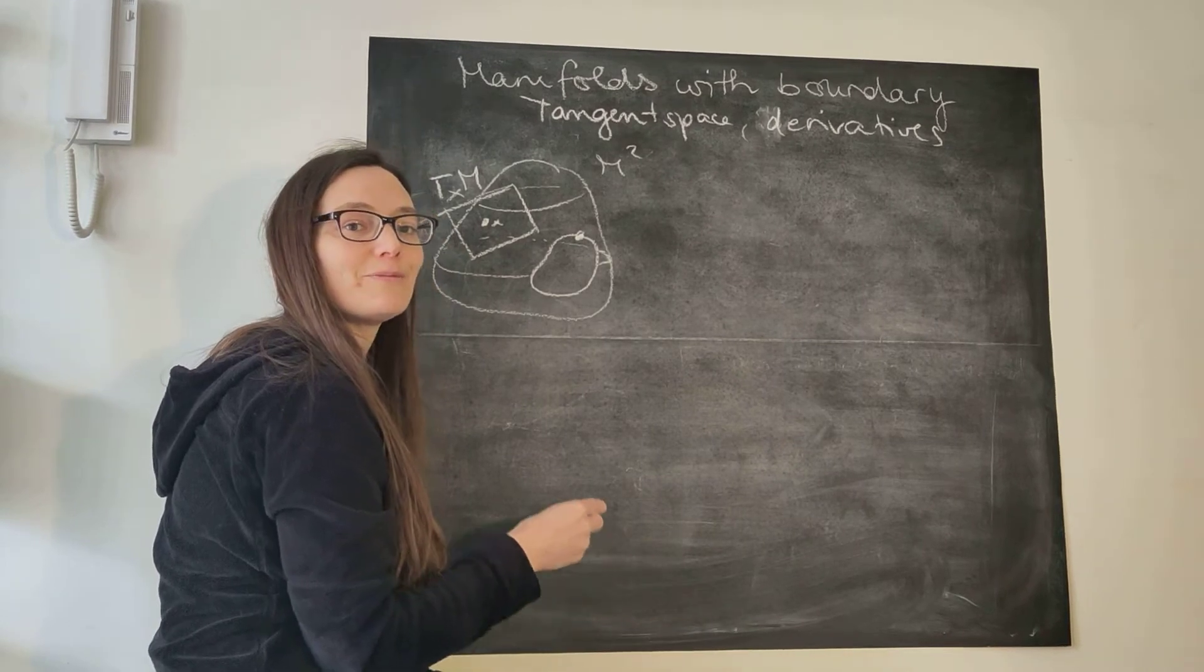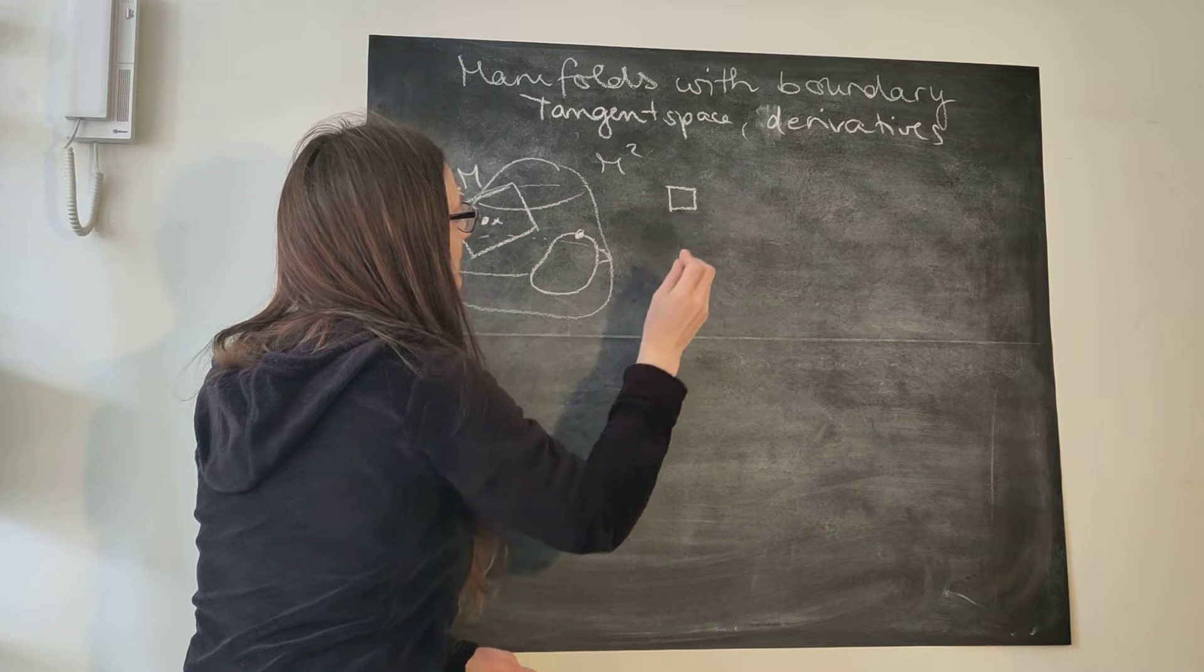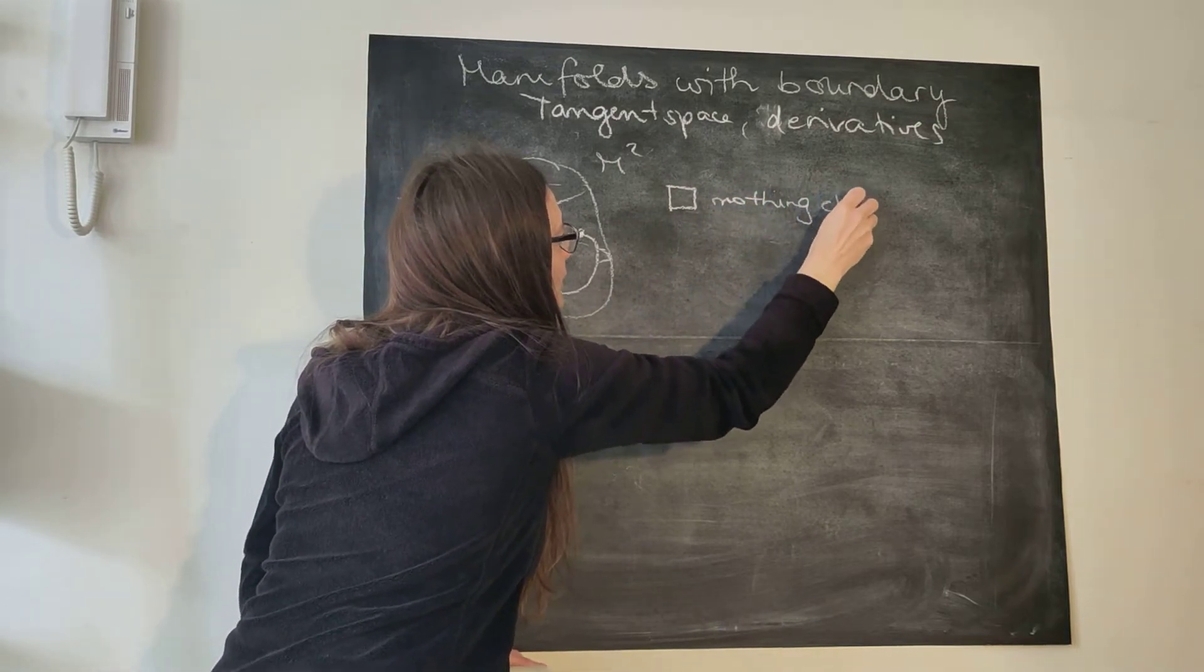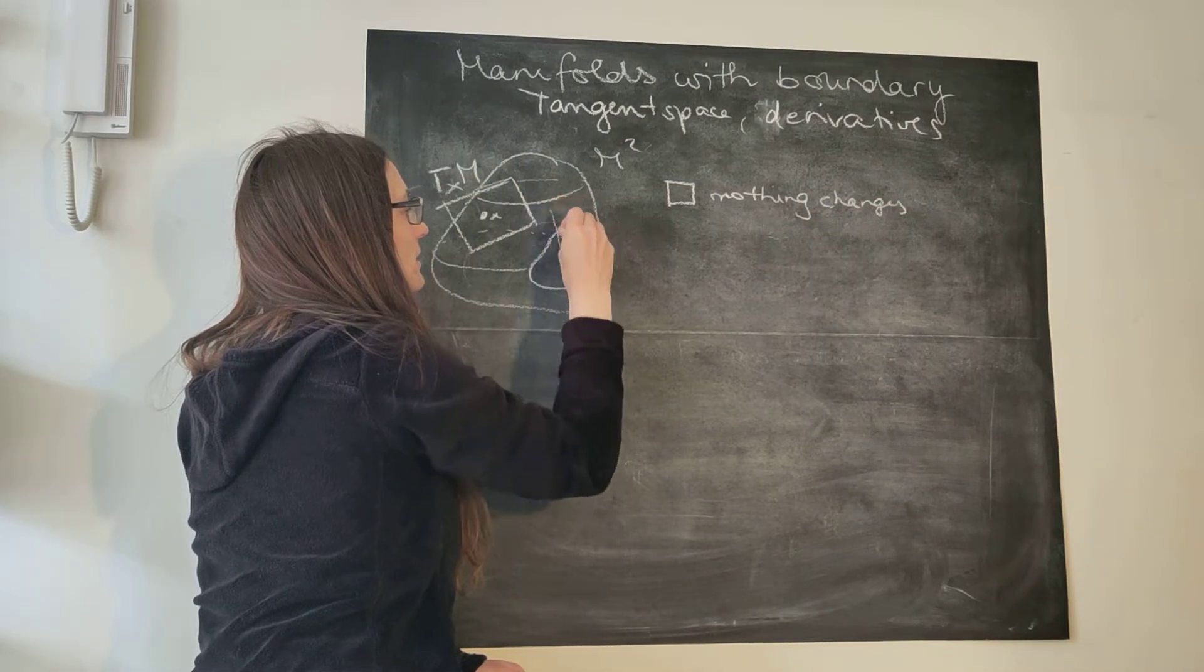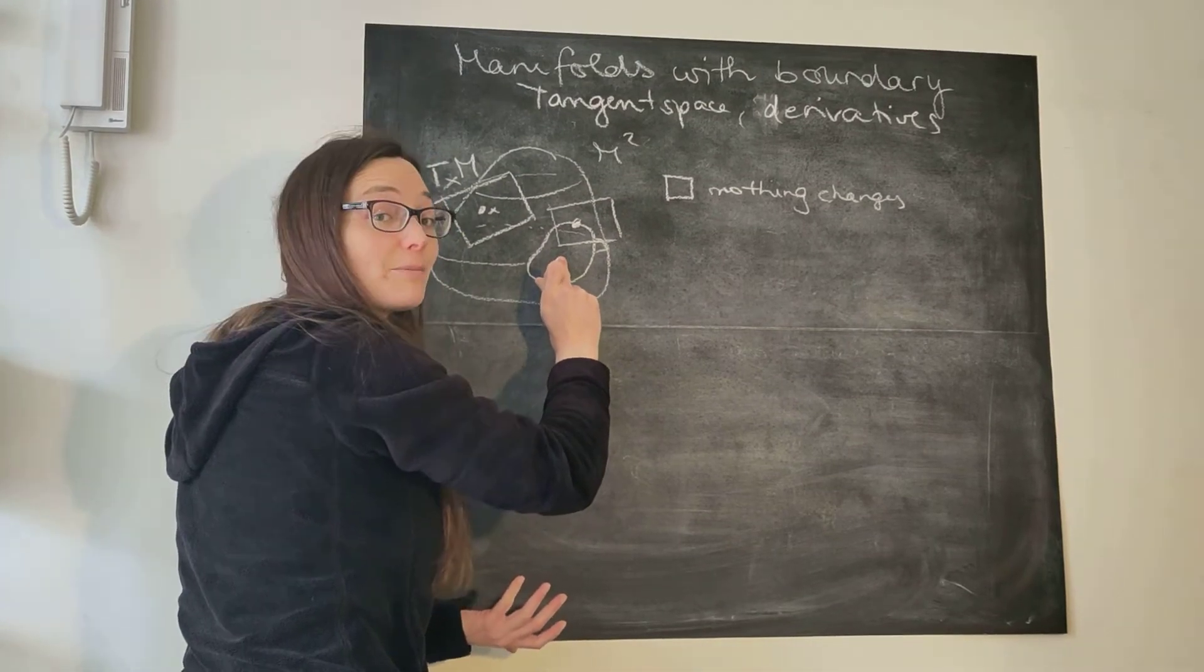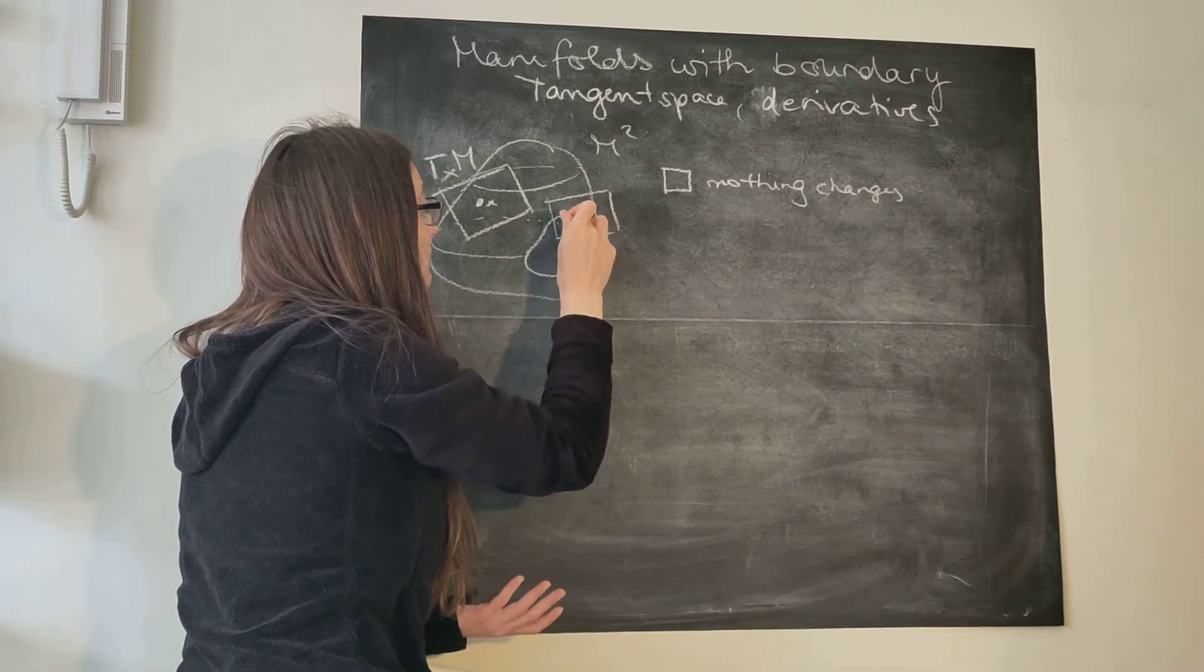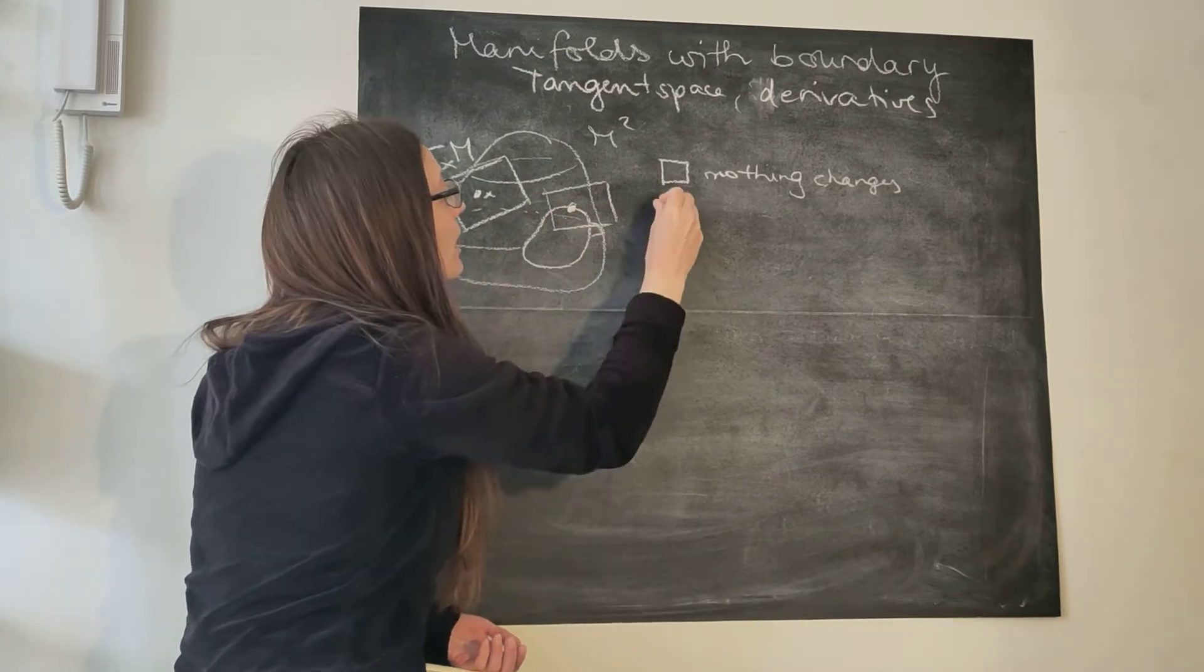I'll give you some multiple choice options. So first one, nothing changes. In the sense that just think of this somehow filled in and forget about the hole. Now you should say for however you fill it in, but it's still a tangent plane.